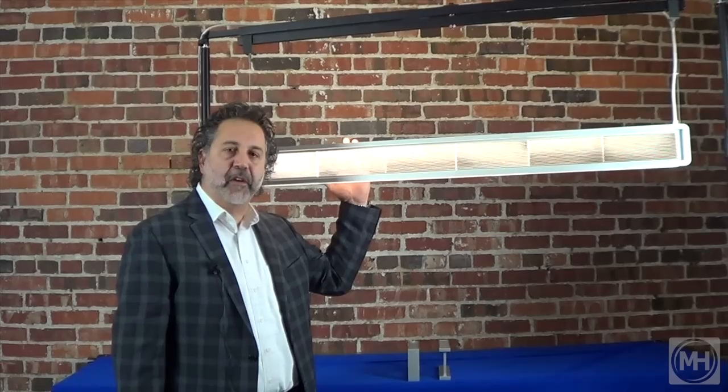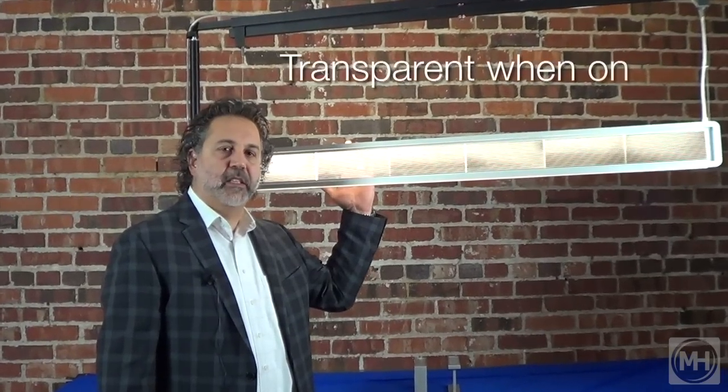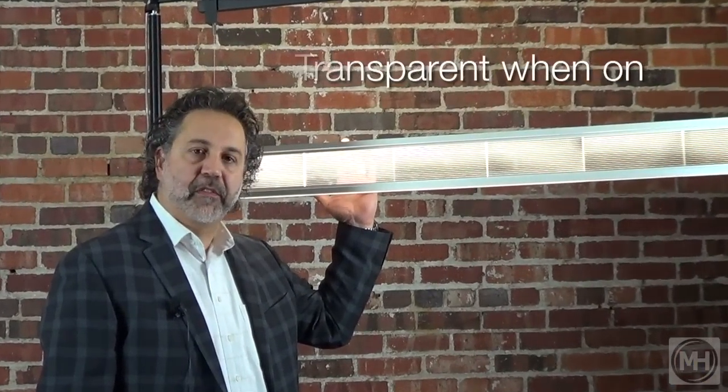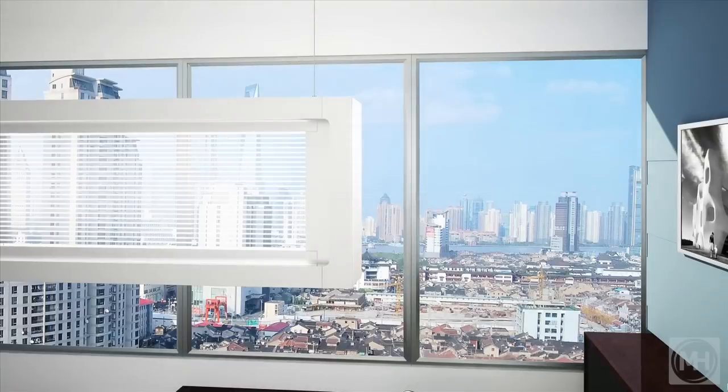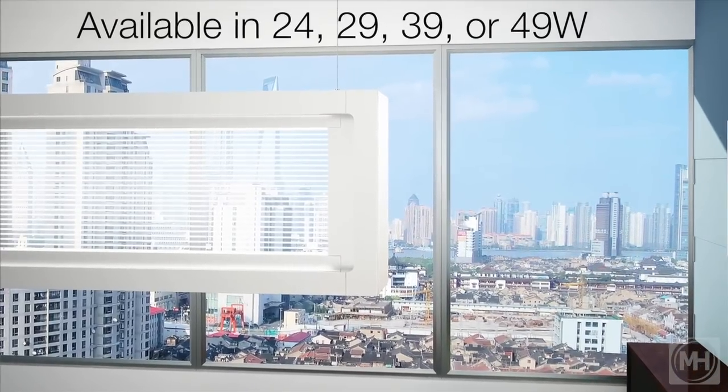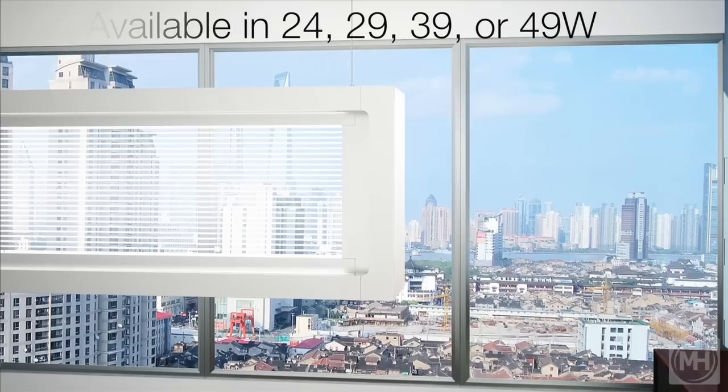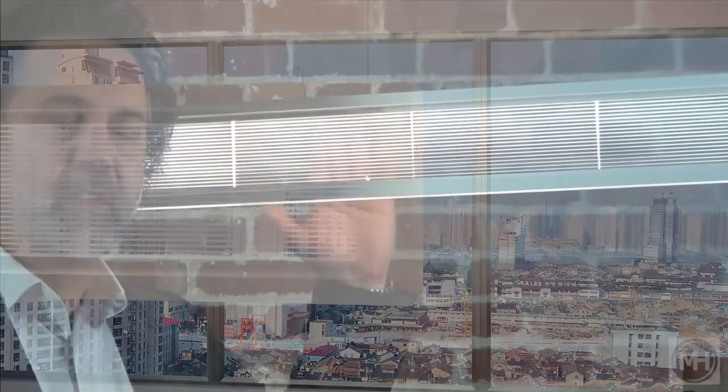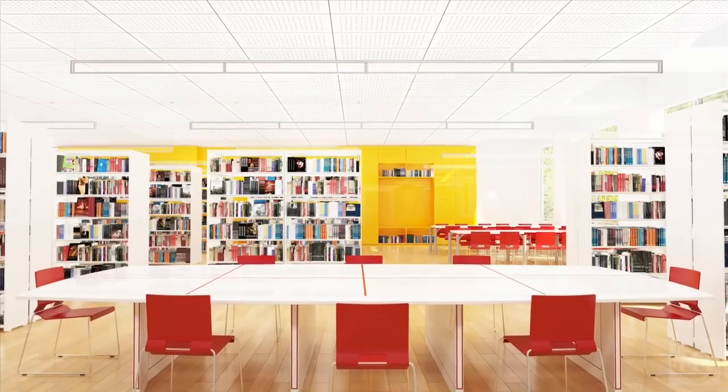One of the most unique features about VIEW is the fact that it's entirely transparent even when the fixture is on. So in 24, 29, 39 or 49 watts, even when the fixture is on, the lens is almost entirely transparent allowing daylight to flow into the space and allowing the product to look like a suspended piece of fenestration just hanging in mid-air effortlessly.